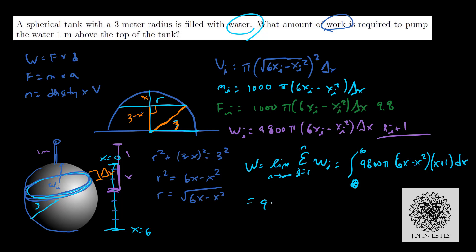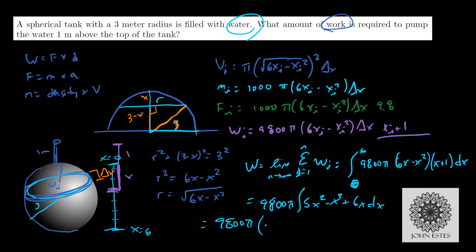So the integral is not too bad. You take out the 9,800 pi, and you have a polynomial. Expanding gives you 5x squared minus x cubed plus 6x dx. From there you get 9,800 pi times the antiderivative: negative one-fourth x to the fourth plus five-thirds x cubed plus 3x squared, evaluated from 0 to 6.